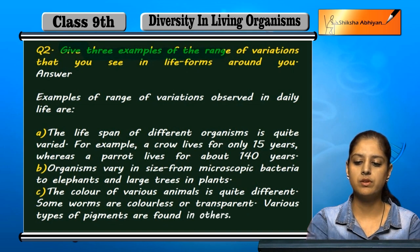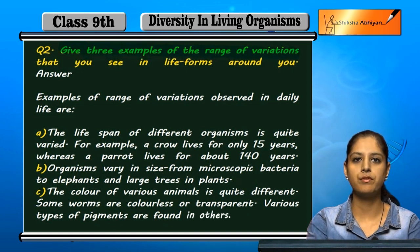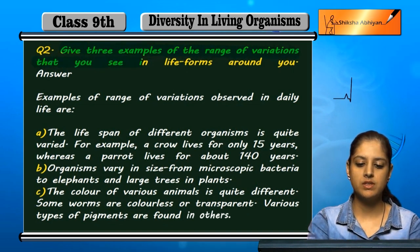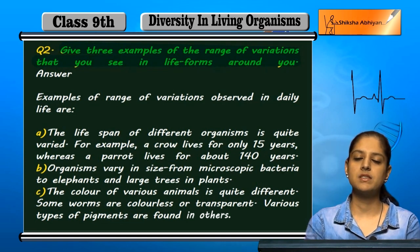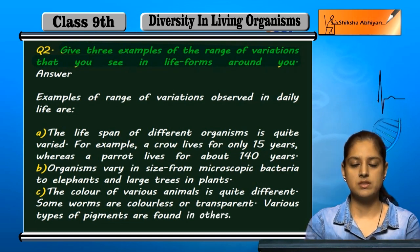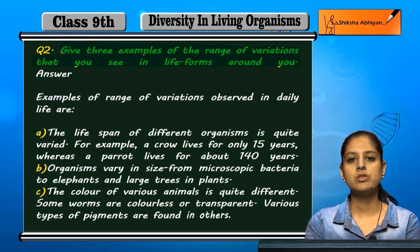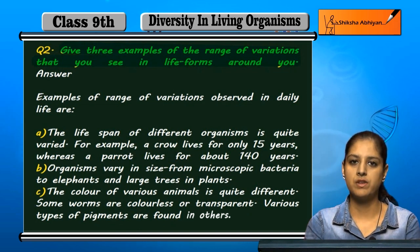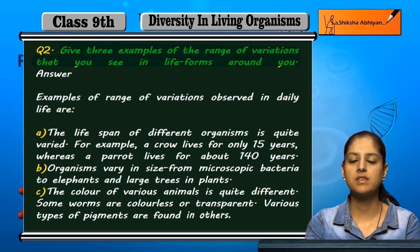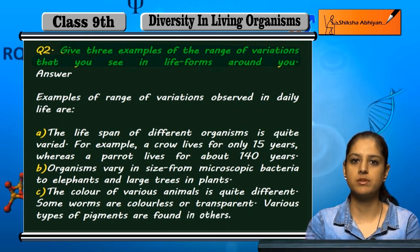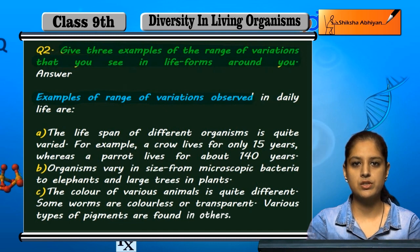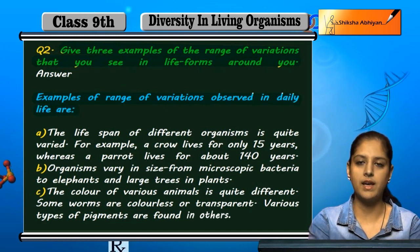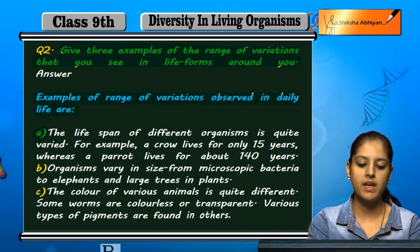Give three examples of the range of variations that you see in lifeforms around you. How many living organisms do we see? There are some variations, some differences. What we observed is some examples. So the examples of range of variations observed in daily life are, first of all: